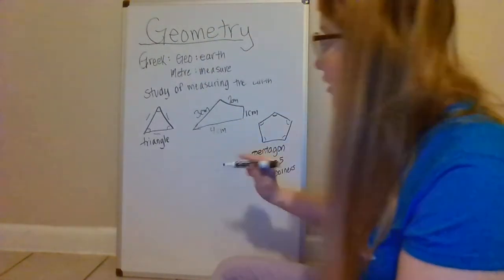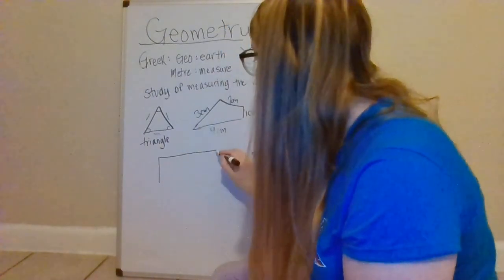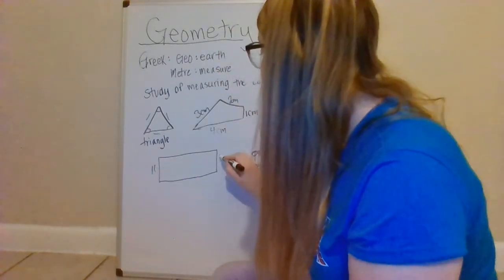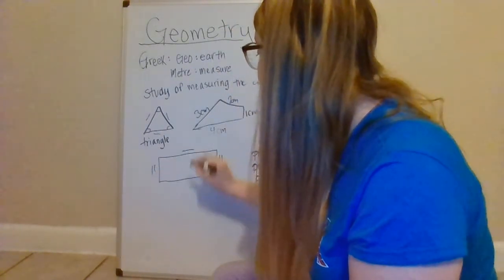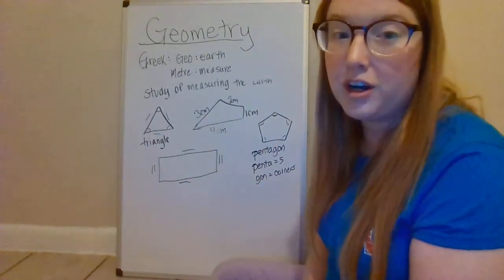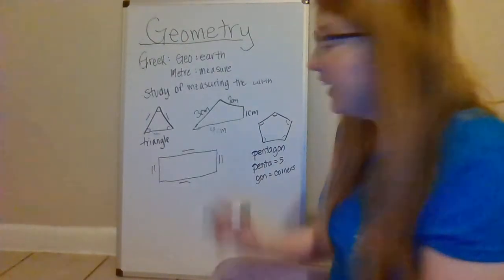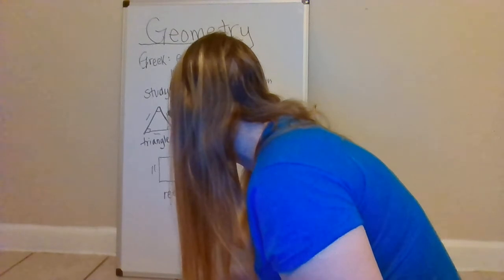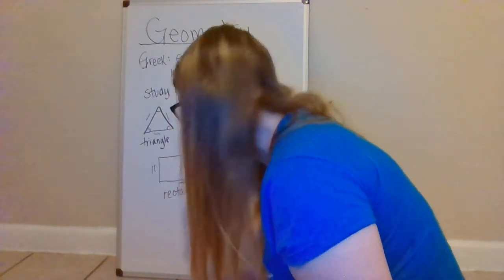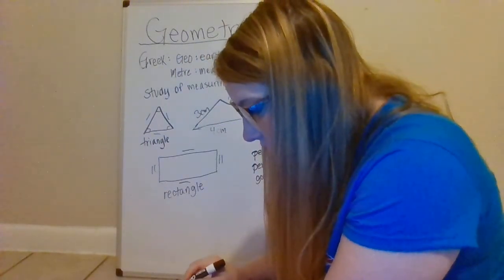Shapes can also have sides that have opposite lengths that are the same. So like, I'm going to put two lines here because these sides are the same and one line here because this line is the same and one line here because that's the same. And what is this shape called? It's called a rectangle.